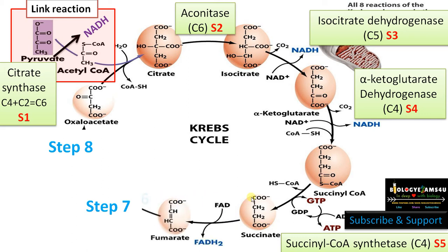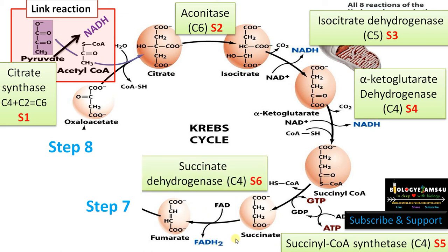In step 6, succinate is converted to fumarate — succinic acid is converted to fumaric acid. This is a dehydrogenation reaction where FAD is converted to FADH2. The enzyme is succinate dehydrogenase, and this is the only enzyme in the Krebs cycle that is located on the mitochondrial inner membrane. A helpful memory tip: FADH2 is formed during the formation of fumarate — both start with F.